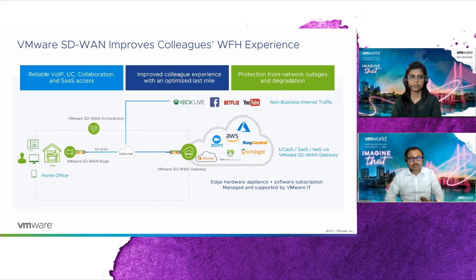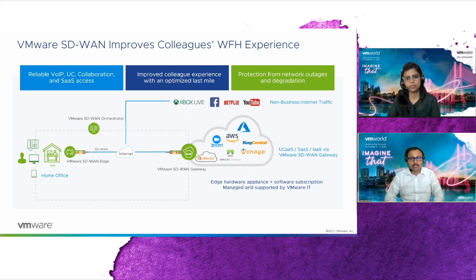Now let's look at our three problems and how we solved them. First, degraded internet performance was solved because SD-WAN provides brownout protection, which helps minimize link degradation through forward error correction, jitter buffering, and synthetic packet production. The second issue was lack of prioritization, or QoS. Using the VCO, we created a business policy to route business-critical application traffic via SD-WAN gateways and routed the rest of the traffic directly to the internet.